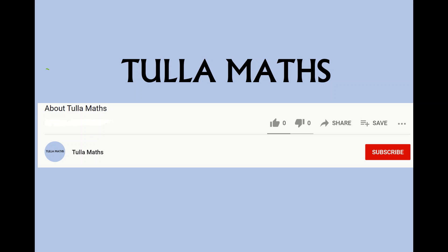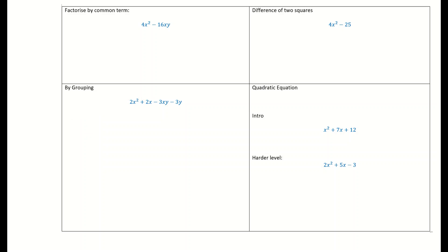Welcome to another tutorial video from Tullamaths. Make sure and subscribe for more. In this video, we're going to look at factorizing — the four ways of factorizing: namely factorizing by a common term, then the difference of two squares, then grouping, and finally quadratic equations. We're going to look at two quadratic equations: an introductory one and then a harder one.